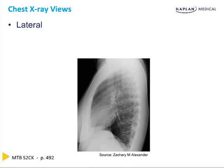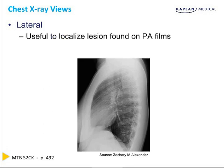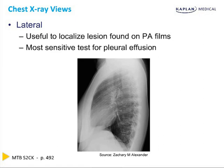Lateral X-rays are extremely useful in corroborating the findings seen on an AP or PA film. Having an orthogonal view allows for better determination of the front-to-back position of a lesion within the thoracic cavity, which can be very important in differentiating certain conditions, such as hilar lymphadenopathy secondary to sarcoidosis, from a mass lesion within the lung tissue itself. Furthermore, since the thoracic cavity dives most inferior in its posterior aspect, lateral films are much more sensitive for diagnosing pleural effusions, and can detect less than 100 milliliters of fluid in the pleural cavity, whereas standard PA films have difficulty detecting anything less than 200 to 300 milliliters.